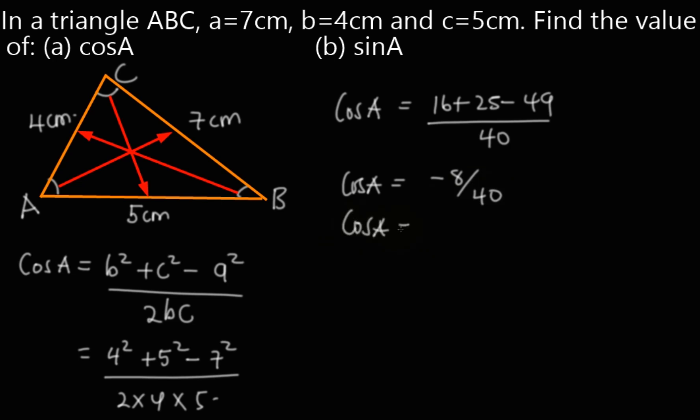So cosine of angle A is equal to -8 divided by 40, we obtain the value of cosine A as -0.2.